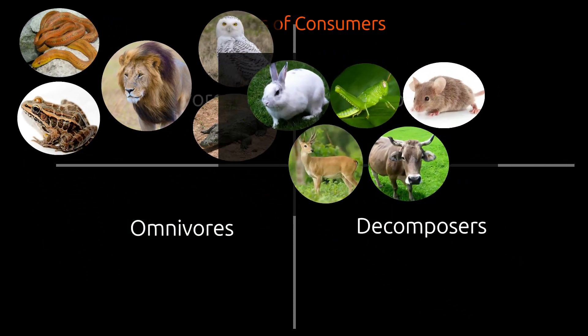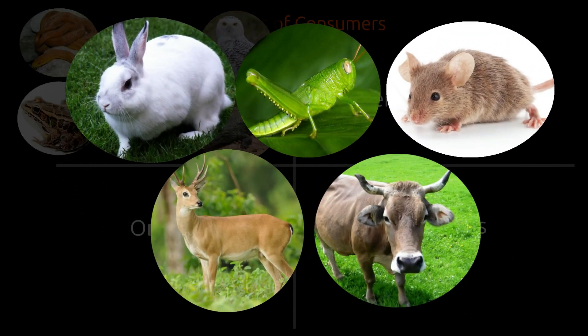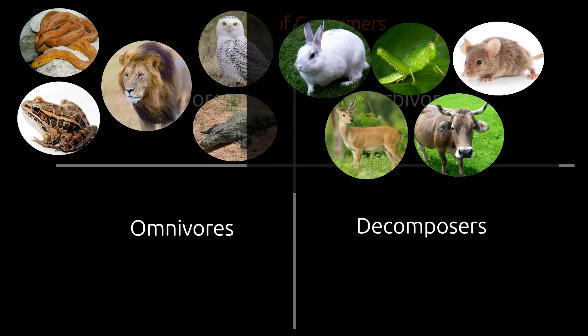Herbivores eat only plants. Deer, rabbit, cow, grasshopper, and rat show the characteristics of herbivores.